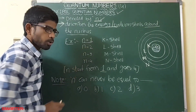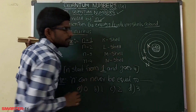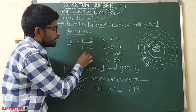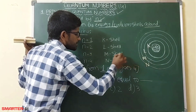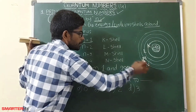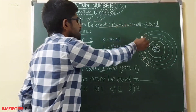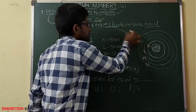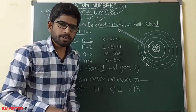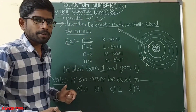When n equals 2, that is the L shell. When n equals 3, that is the M shell. When n equals 4, that is the N shell. These shells are nothing but the energy levels.